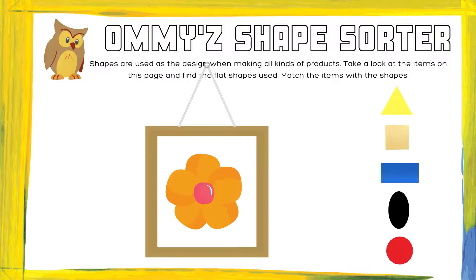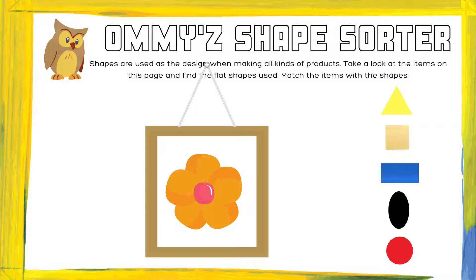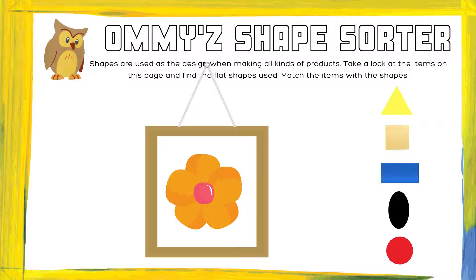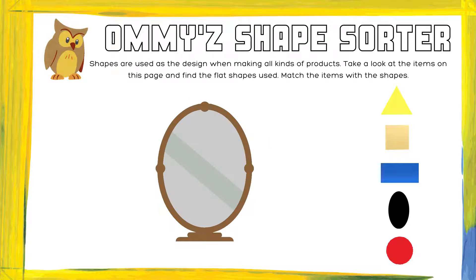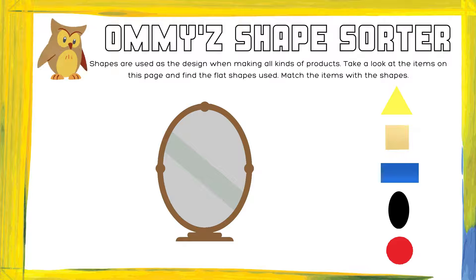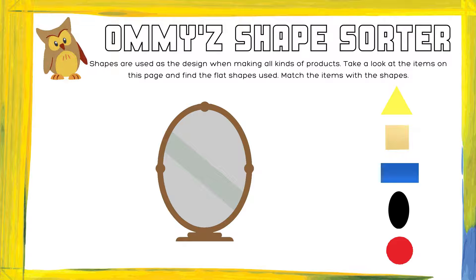What about this shape? Beautiful job — yes, it's a picture, and it's shaped like a square. We've got two more to go, friends. What about this mirror? Absolutely, friends — it's shaped like an oval. Good job, boys and girls.